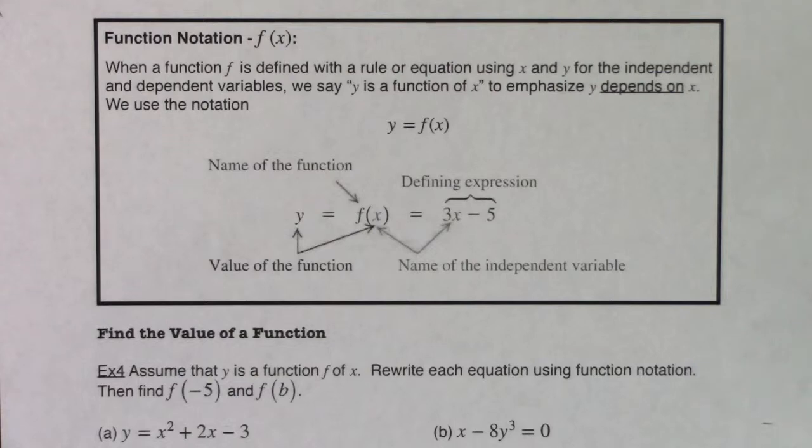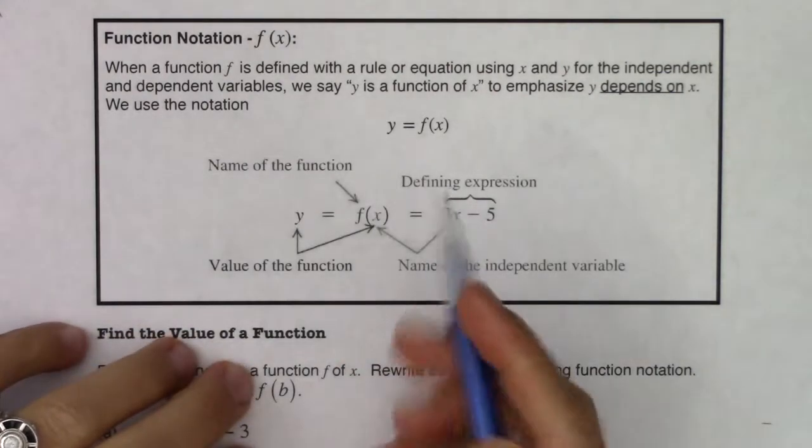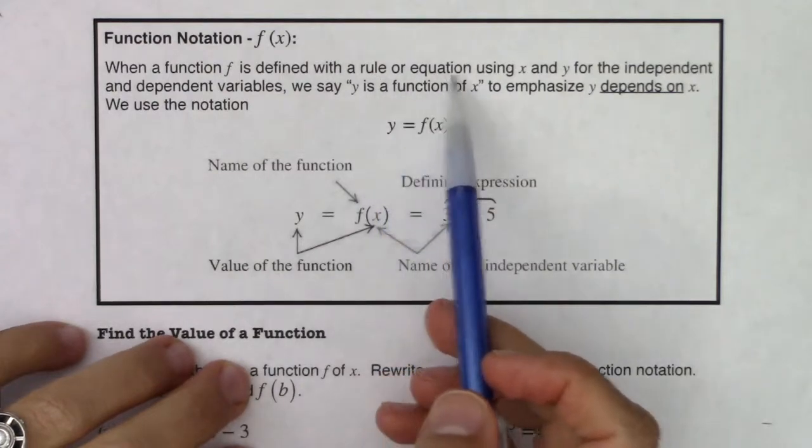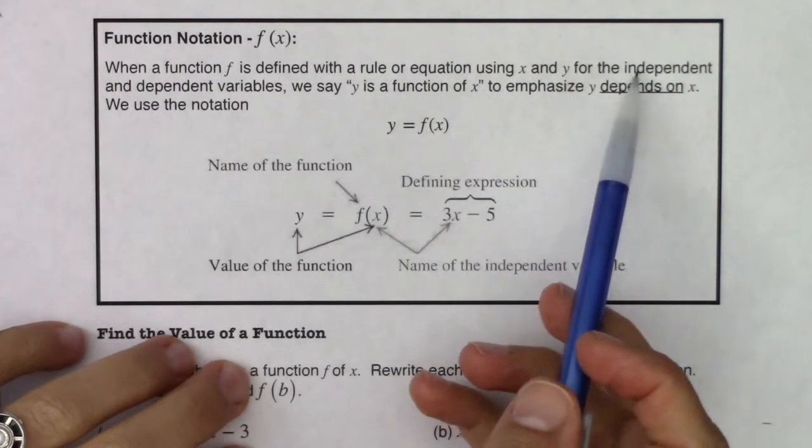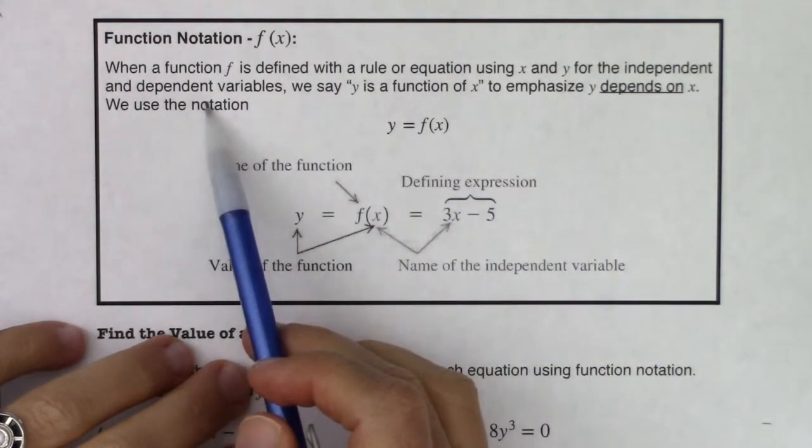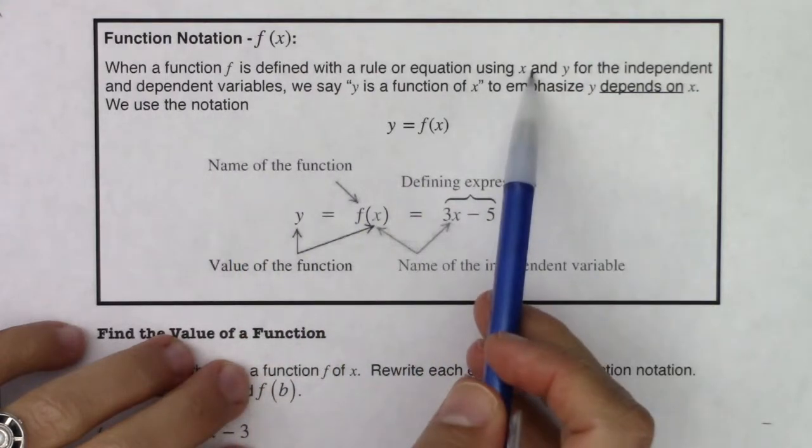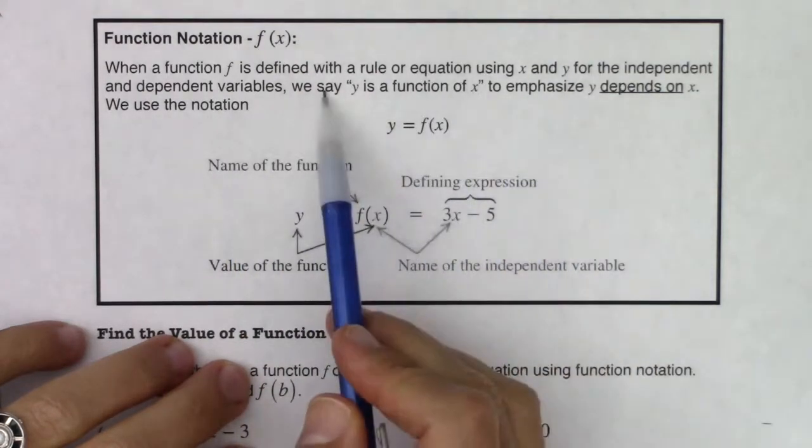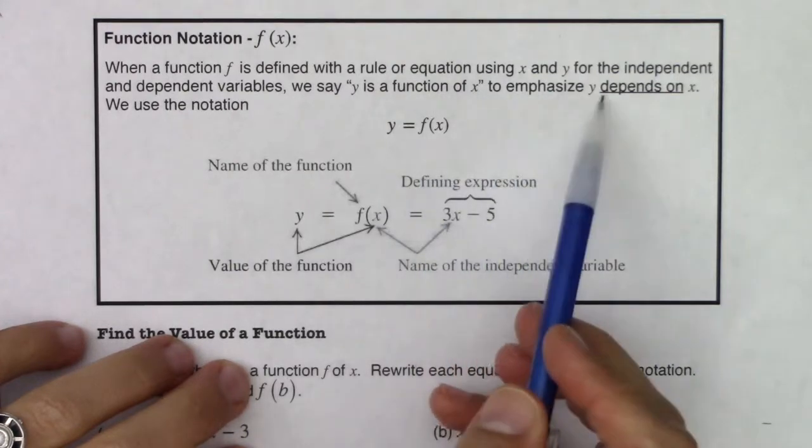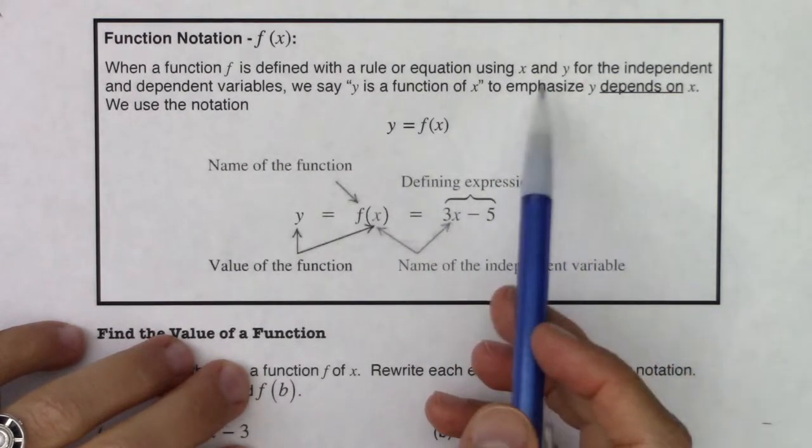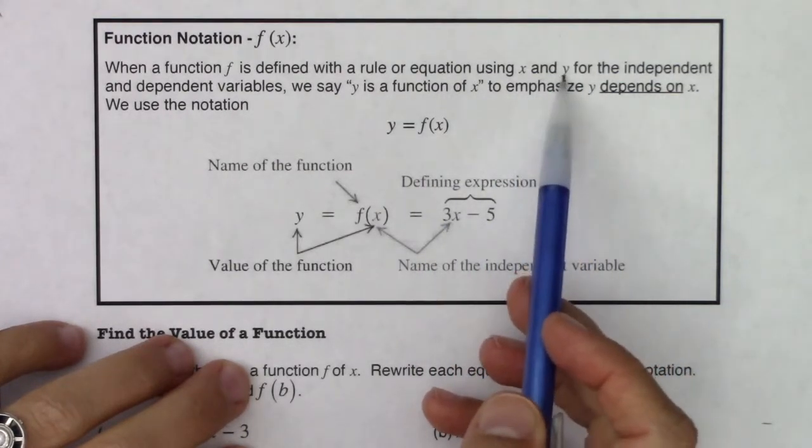Hey Math 31, let's review function notation for just a bit. When a function is defined with a rule or equation using x and y for the independent and dependent variables, so x is independent, y is dependent, we say y is a function of x to emphasize that y depends on x, which is why we call y the dependent variable.